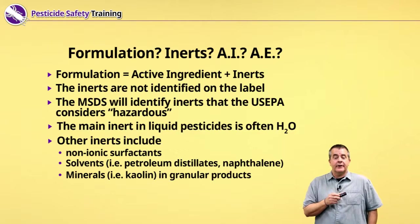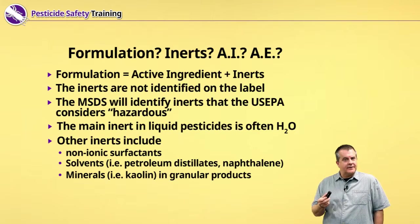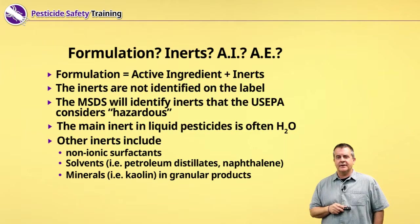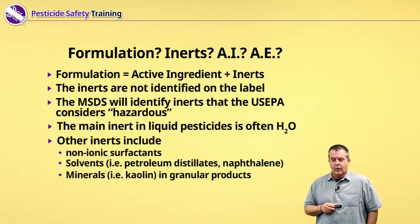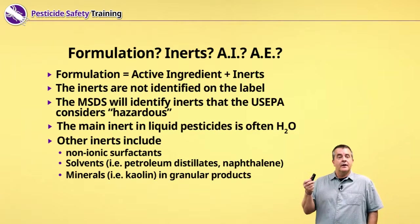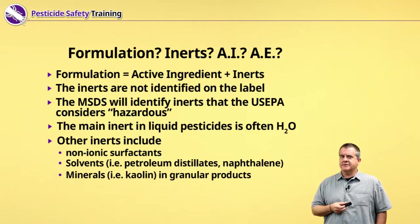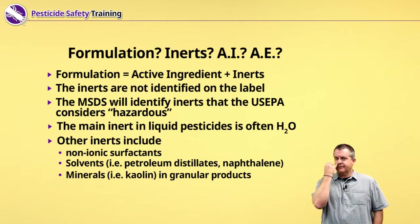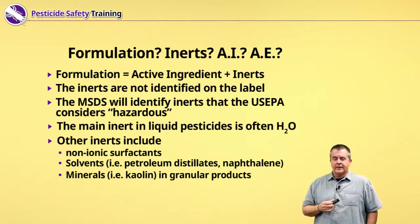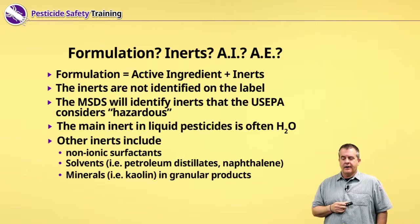Other inert ingredients might include surfactants — compounds that help the pesticide get into the leaf or stick on the leaf — or petroleum-based solvents that help oil-based pesticides stay in solution so they don't separate. In the case of dry pesticides like dusts, mineral materials may also be used as inerts.